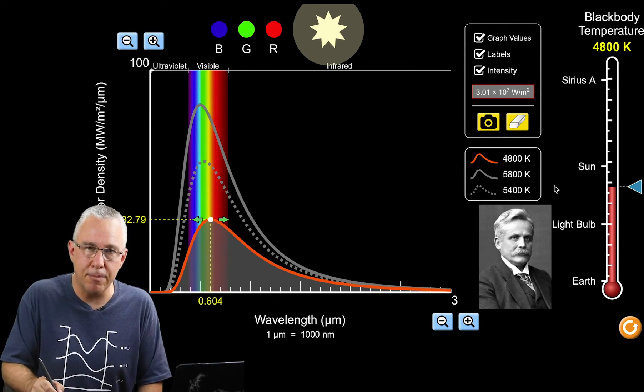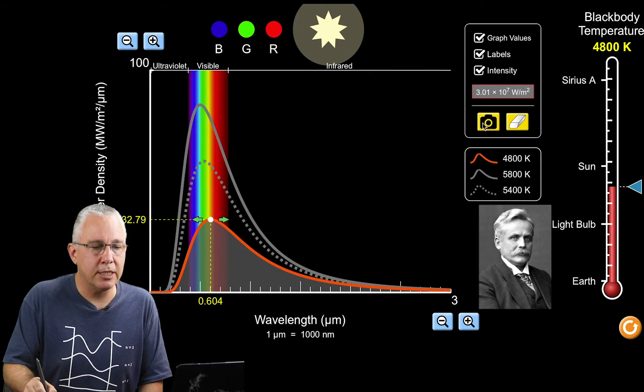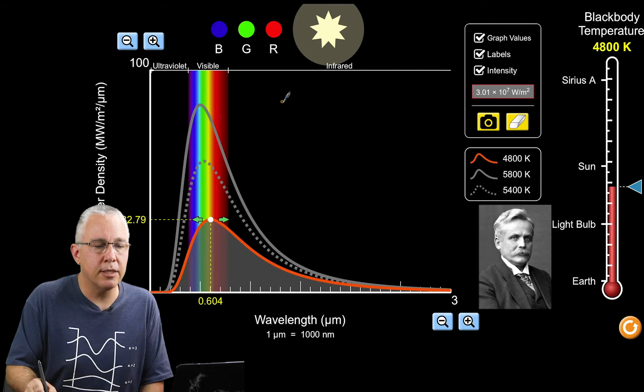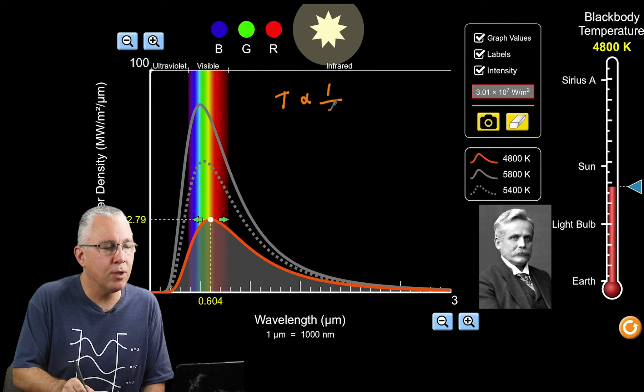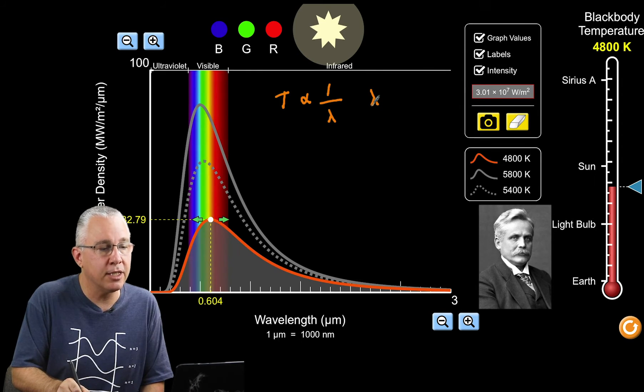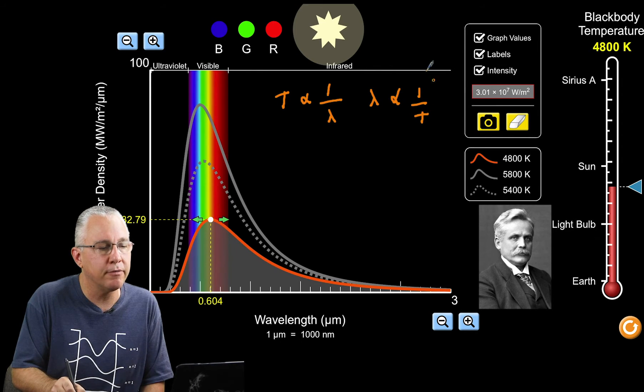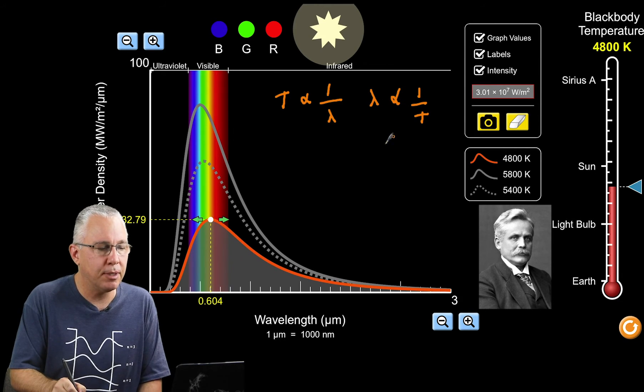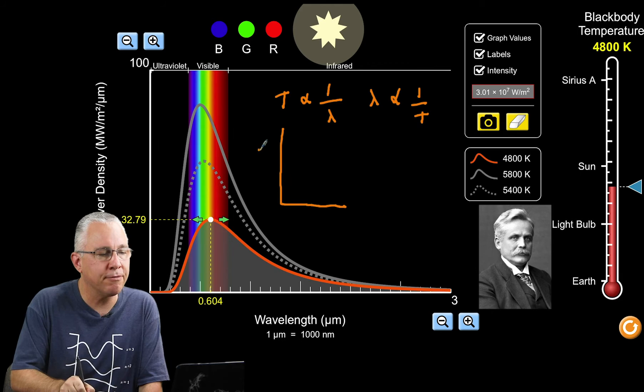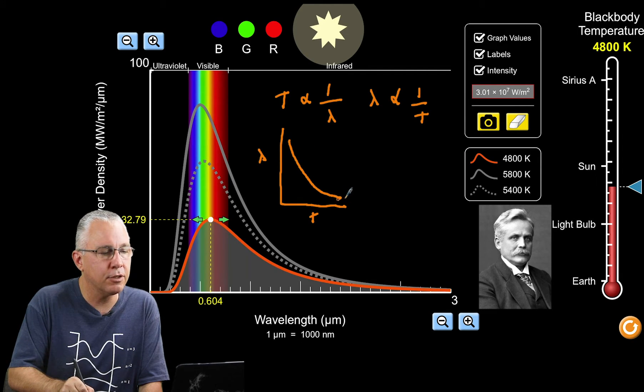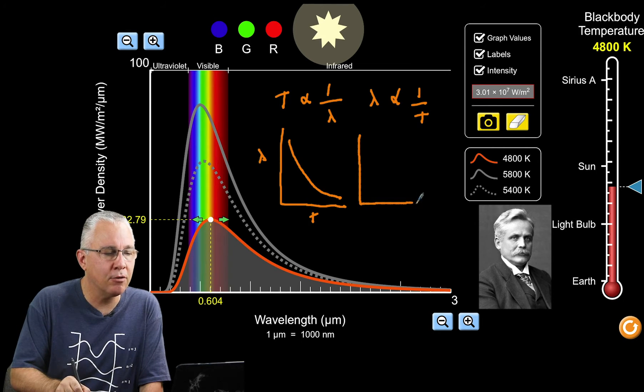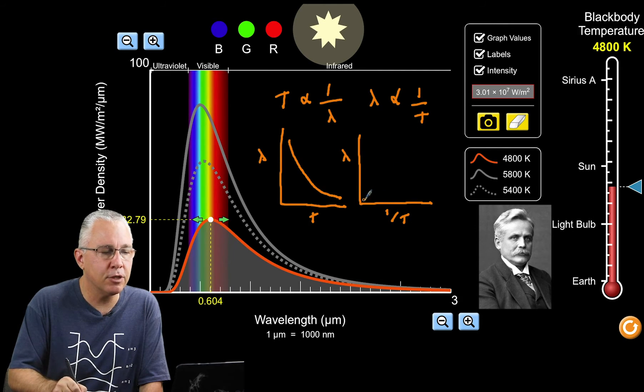It's an inverse relationship, so we know temperature is proportional to one over the wavelength, or we can write that the wavelength is proportional to one over the temperature. If we graph wavelength with temperature, we get an inverse relationship. But if we graph wavelength with one over the temperature, we get a straight line. That tells us the slope, wavelength divided by one over T, is a constant value. I'm going to call that constant value b.